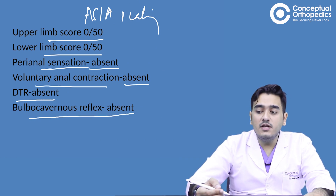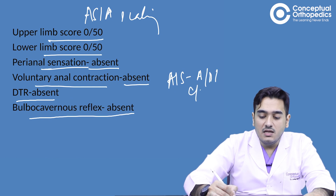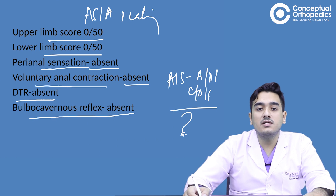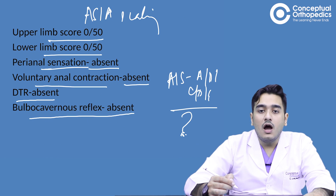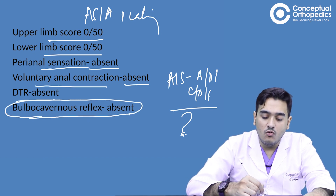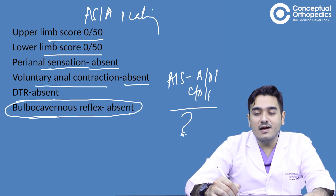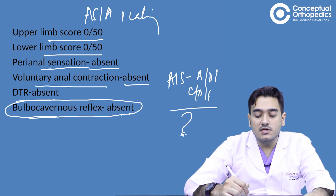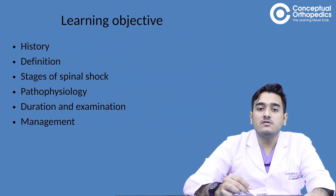Voluntary anal contraction is absent, deep tendon reflexes are absent, and the bulbocavernosus reflex is absent. The key question is: what is the ASIA grade of this patient — A, B, C, D, or E — or is the patient in spinal shock? This question arises because when a patient presents immediately after trauma with absent bulbocavernosus reflex and no movements or sensation, it is difficult to confirm whether the patient is out of spinal shock or not, and therefore what the true ASIA grade is.